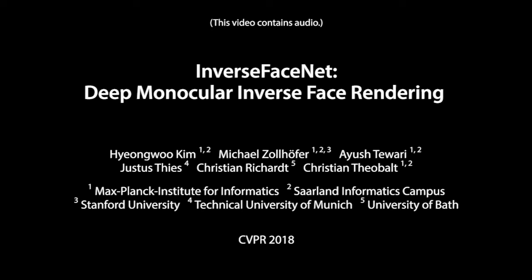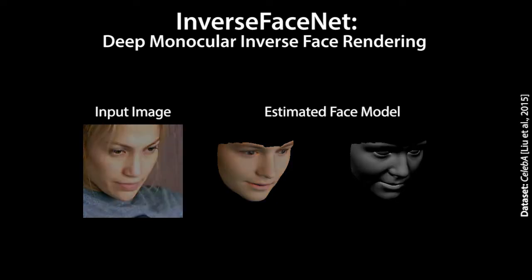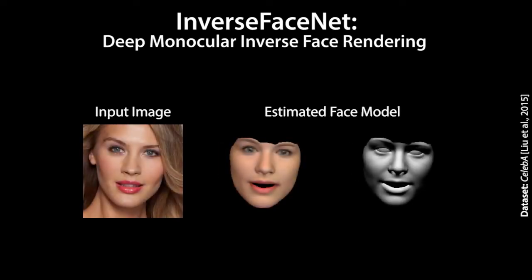We present Inverse PhaseNet, a novel deep learning approach for single-shot inverse phase rendering from a single image at over 250 Hz. The phase models estimated by our approach are of high quality and fit well to the input images in terms of color and geometry.